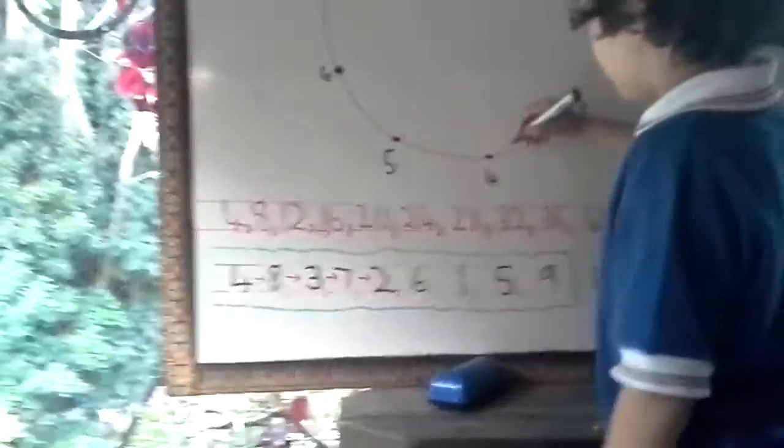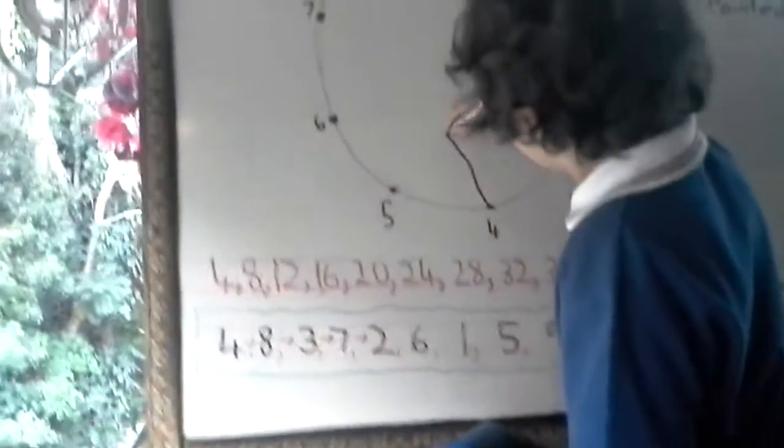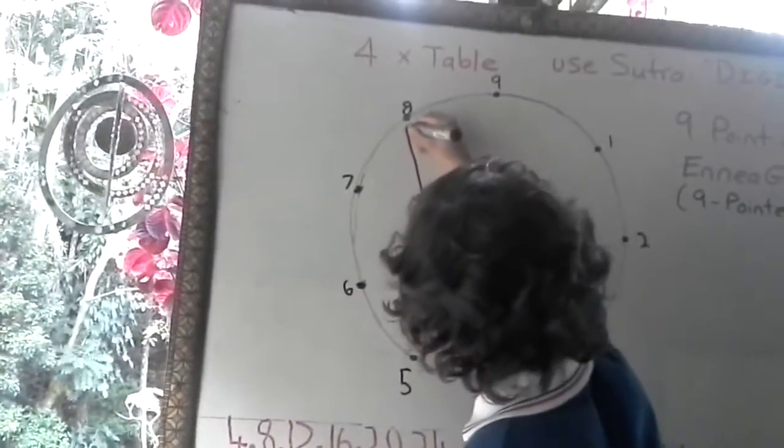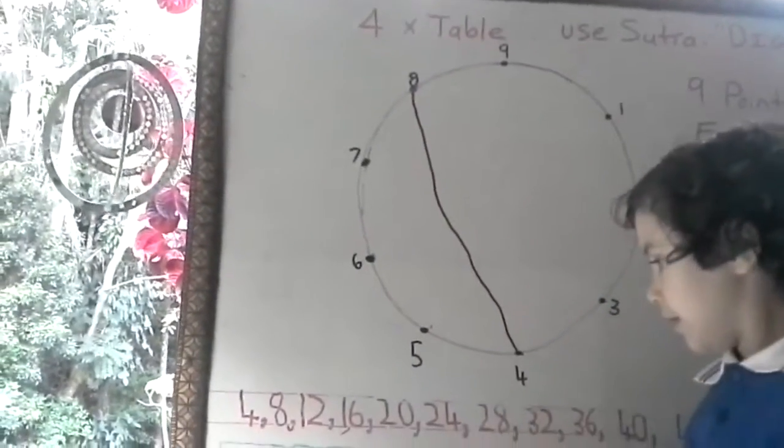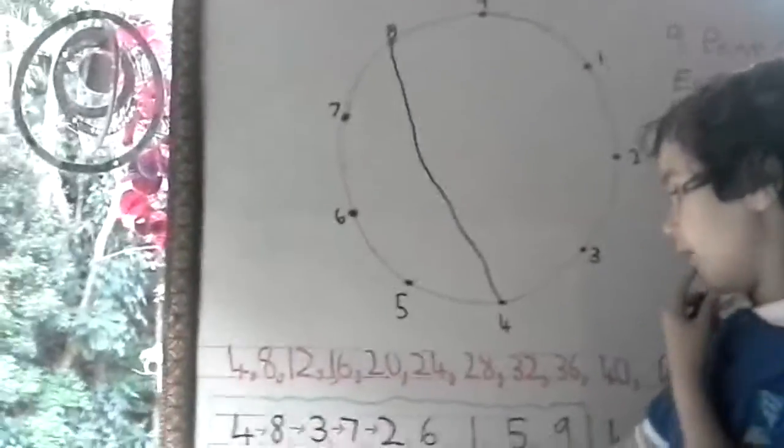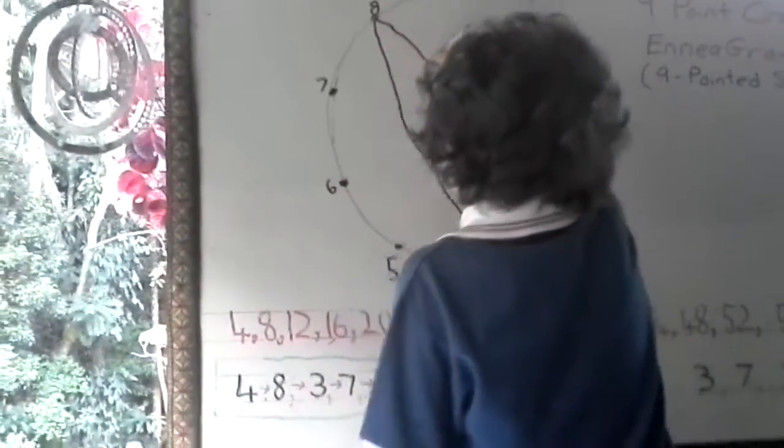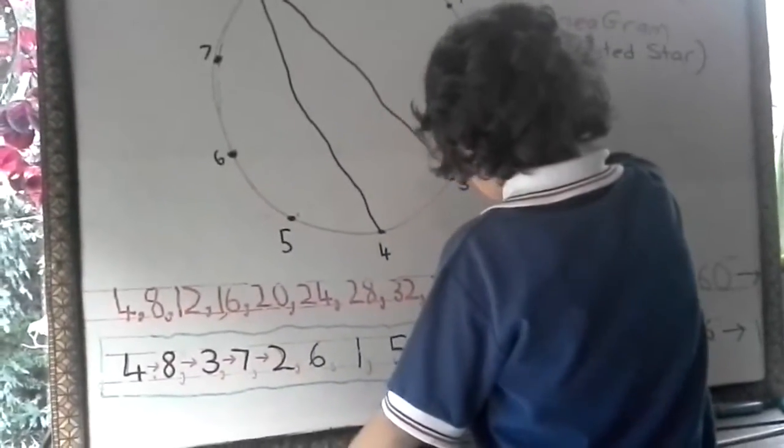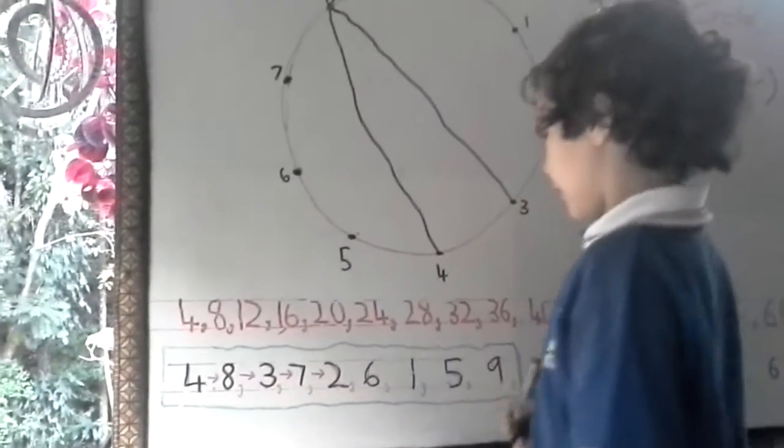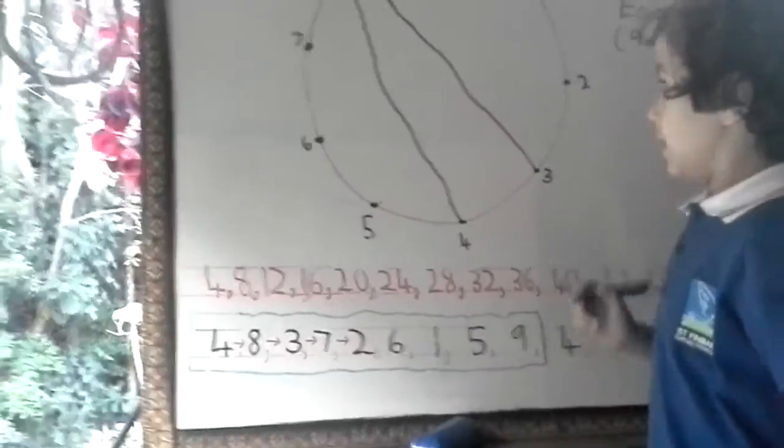Then from 4 to 8 we attach them. Just a nice straight line is it? Yes. So 4 to 8. Then from 8 to 3. Then from 3 to 7.